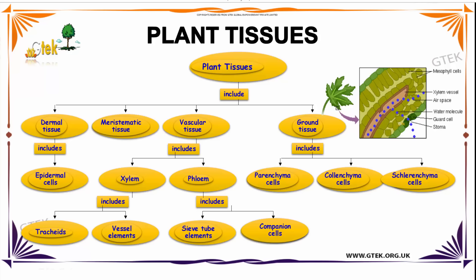The plant tissue has Xylem and Airspace, Water Molecule, Guard Cell, and Stoma, which is represented over here.